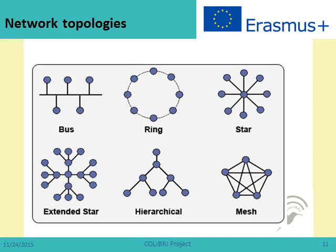Continuing with networking concepts, we have the network topology — the way nodes and links are organized. The most typical topologies are bus, ring, star, extended star, hierarchical (also known as tree topology), and mesh networks. Tree or hierarchical and mesh topologies are typically used in core or backbone networks, while bus, ring, star, and extended star are used in local area networks or metropolitan area networks.